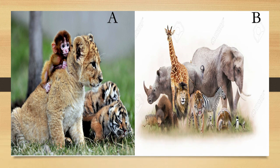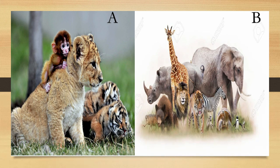Alpha diversity refers to the unique species found in each region. Now, beta diversity is the comparison between regions. For A, there is no unique beta diversity compared to B because the three species in A are also found in B. But in B, there are eight unique organisms not found in A.